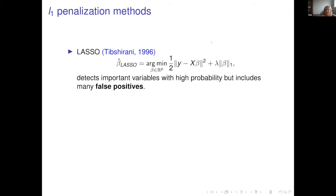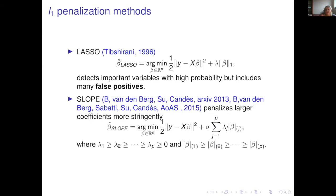In LASSO, we minimize the sum of squares of residuals — like in least squares regression — plus we add regularization by the L1 norm. This L1 penalty is a very nice method, though I'm going to say a few words about what might be the problem with it.